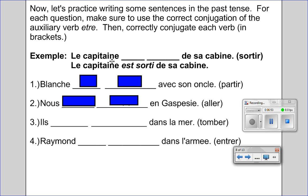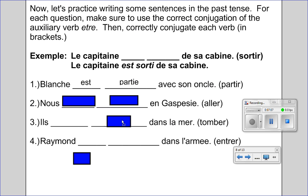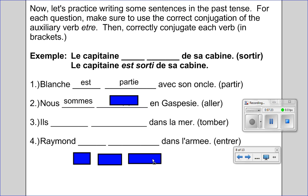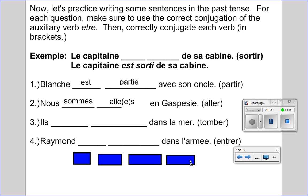Let's look at the solutions. For the first one, 'Blanche a visité son oncle' — the verb is partir. Blanche is feminine singular, so it's going to be 'est,' and because it's feminine singular the verb becomes 'partie' with an E at the end. For the next one, 'nous en classe' — it's going to be 'nous sommes.' Nous can be masculine or feminine, so I would write the extra E in brackets to indicate an all-female group, and the S is at the end because this is a plural subject. Please put the video on pause so that you can try the remaining questions.